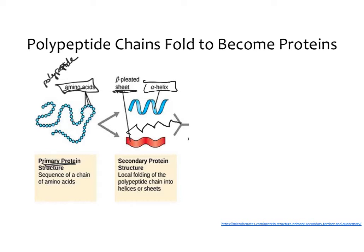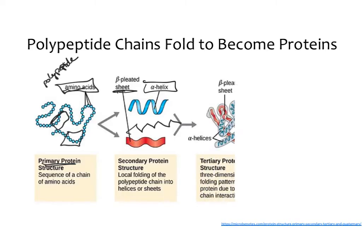Those secondary structures can further fold or come together to form even more significant structures. One section of the protein might coil into an alpha helix and another into a beta pleated sheet, so within one protein you can have multiple iterations of these alpha and beta structures. We then go on to tertiary structure, where the protein undergoes three-dimensional folding — the alpha helices and beta sheets form bonds between each other, allowing it to become a 3D structure.